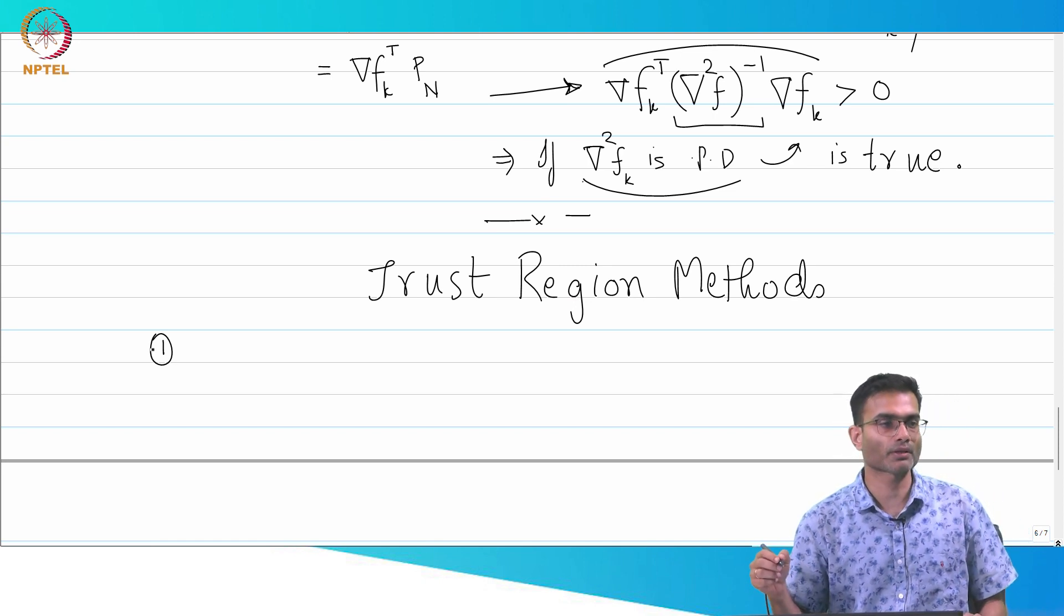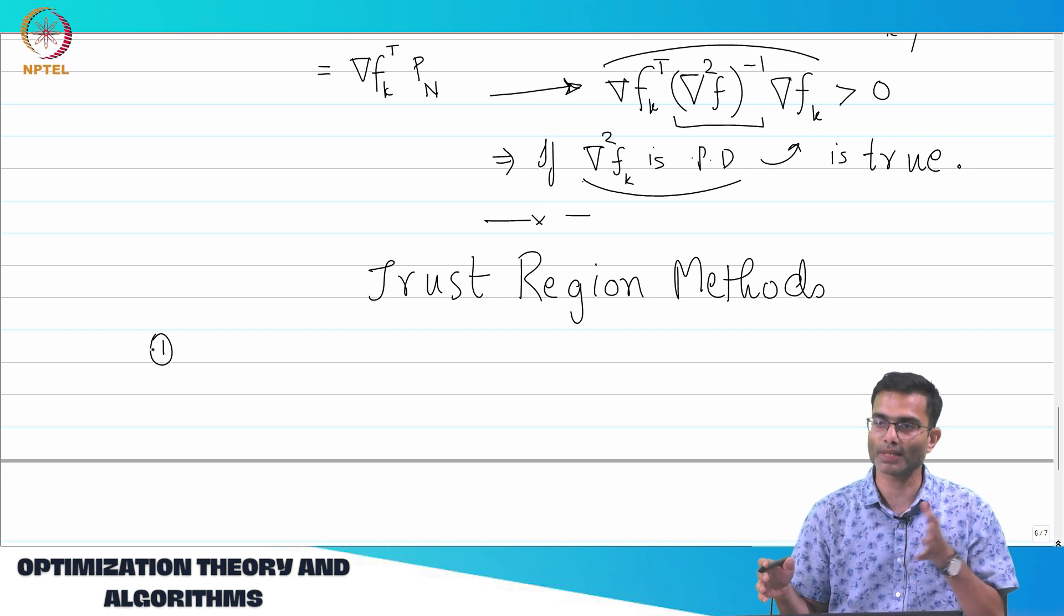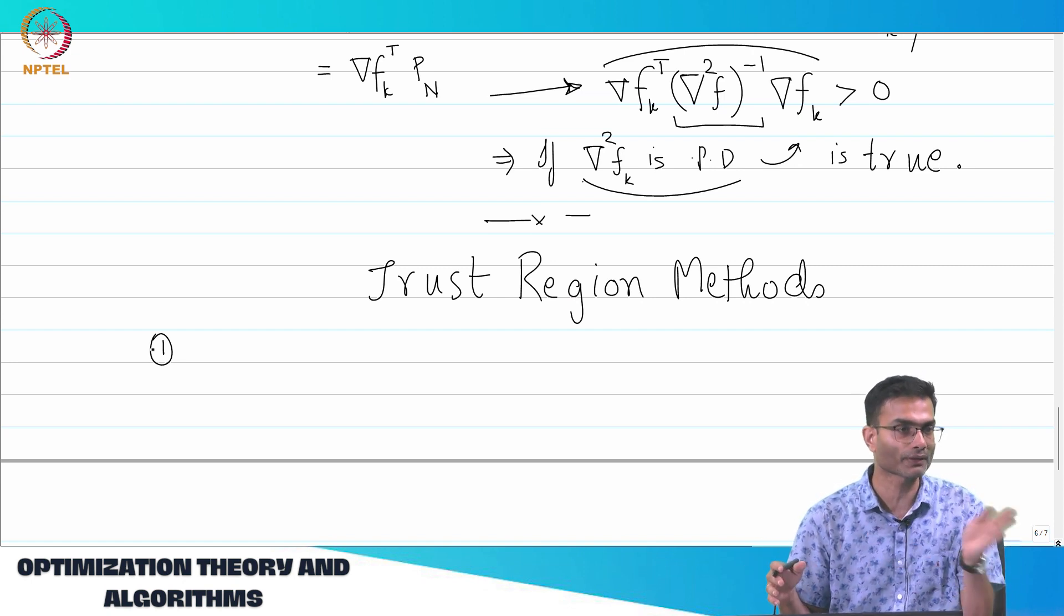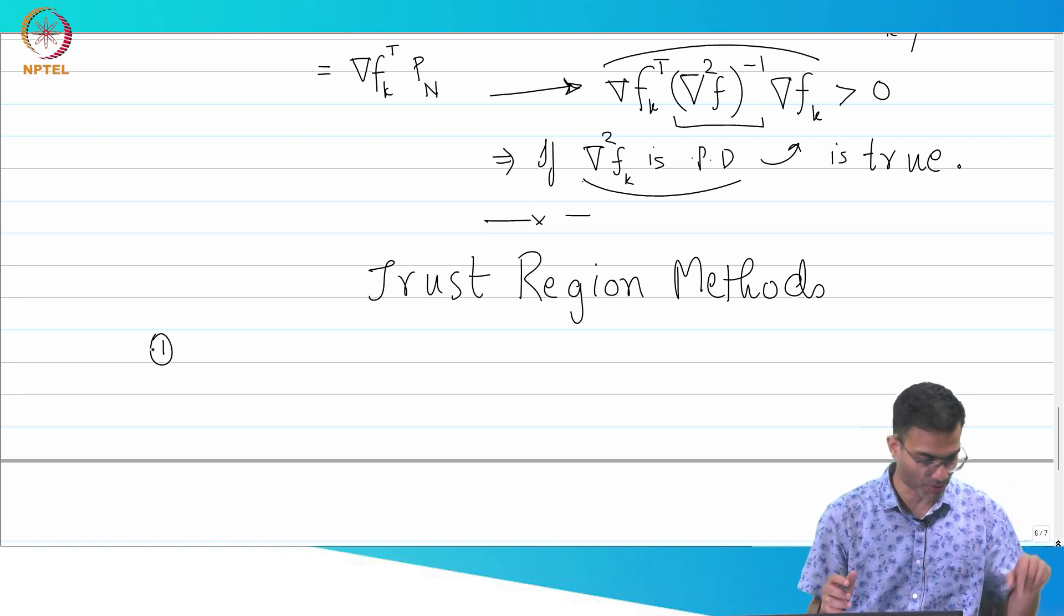So the trust region approach is kind of a complement to the line search. In the line search I am trying to find the correct direction to go to. In a trust region approach what I do is there are two steps.